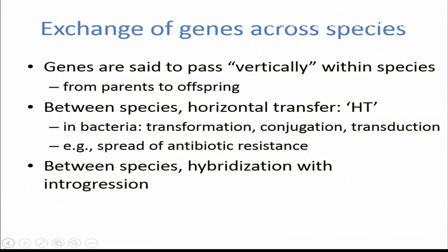So the normal hereditary pattern, of course, is vertical transmission, where parents pass their genes on to offspring within a species. There are two ways in which genes can overcome species boundaries and be exchanged, and the first is called horizontal transfer. This is a process that is much more frequent in bacteria, associated with bacteria, and it happens by a number of means: uptake of naked DNA, conjugation, and so on and so forth. The public health importance of this was brought home in the late 1950s, when it was discovered that antibiotic resistance was being exchanged among pathogenic bacteria.